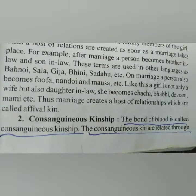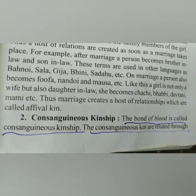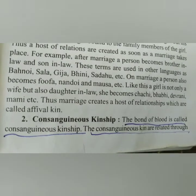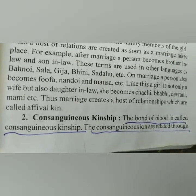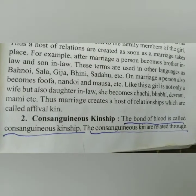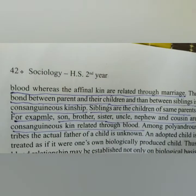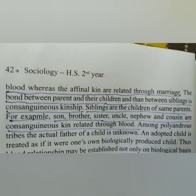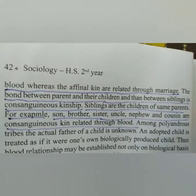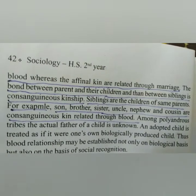The bond of blood is called consanguineous kinship. The bond of marriage is called affinal kinship, whereas the bond of blood is called consanguineous kinship. Consanguineous kin are related by blood, whereas affinal kins are related through marriage. The bond between parents and their children, and between siblings, is consanguineous kinship.